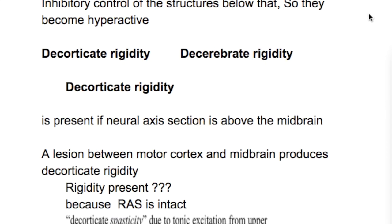Removal of the cerebral cortex, or decortication, leaves all the reflex patterns of a midbrain animal. A midbrain animal is easy to maintain because the hypothalamus is still intact, controlling different visceral and temperature-regulating homeostatic mechanisms. The most striking defect in a decorticate animal is the inability to react in terms of past experience.